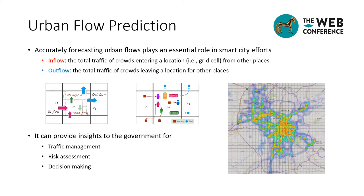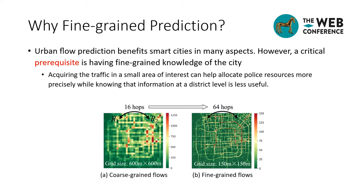Accurately forecasting urban flows — such as predicting the total crowd flows entering or leaving each location of a city — plays an essential role in smart city efforts. It can provide insights to the government for traffic management, risk assessment, as well as decision making. However, a critical prerequisite is having fine-grained knowledge of that city. Acquiring traffic in a small area of interest can help allocate police resources more precisely, while knowing that information at a district level is less useful.